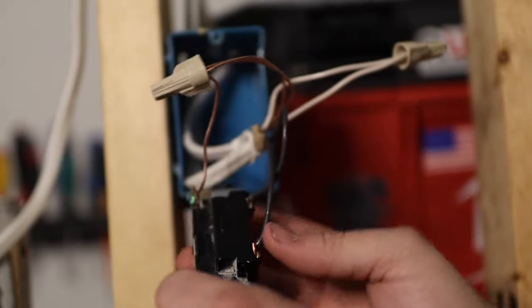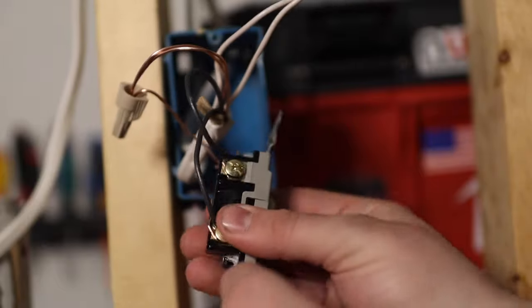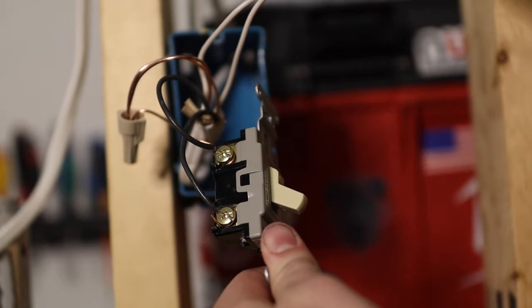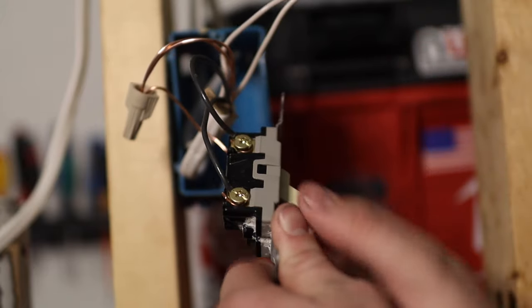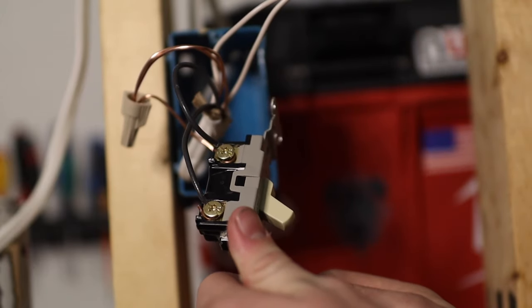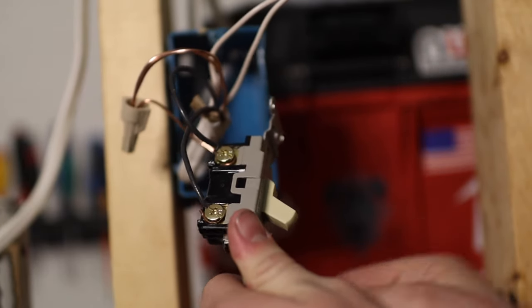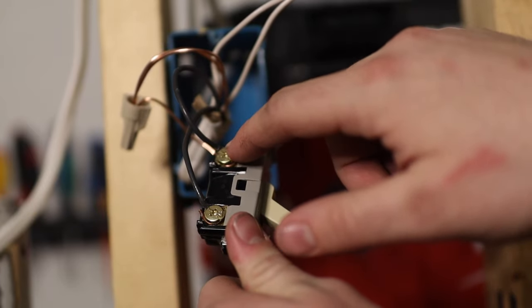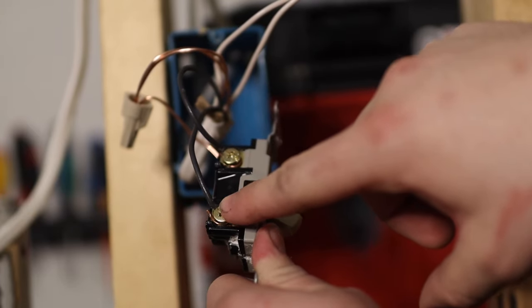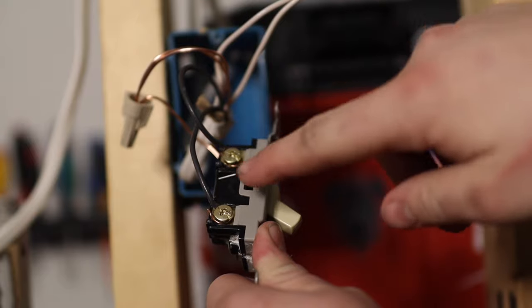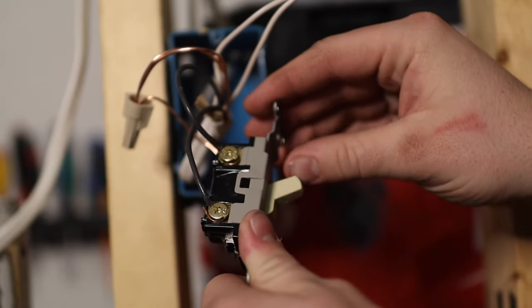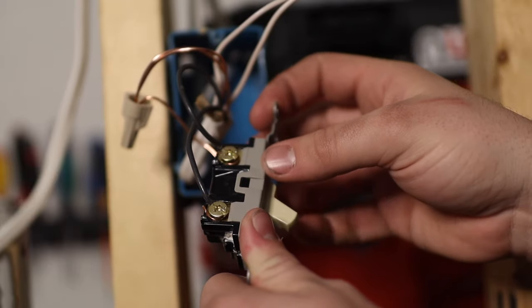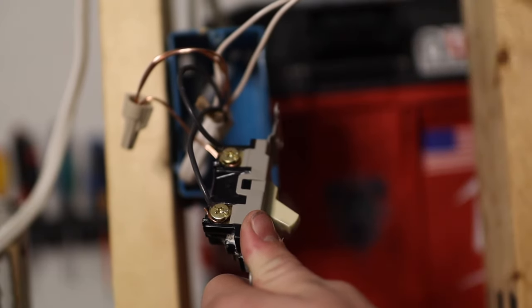So if you guys didn't quite catch that, if you guys need to repeat that, just go ahead and rewind. But it is not very complicated. Unless there's more than one switch in there, it can get a little bit tricky to see which wires go where, but you always have to remember that you have a constant power. And then on the other end, you have your light, the wire that goes to the light. That way, when the switch flips, it breaks the connection to the light.